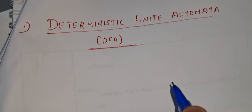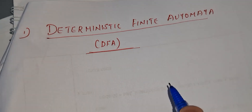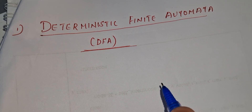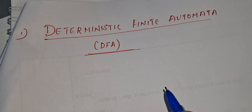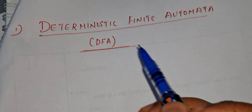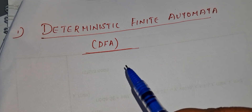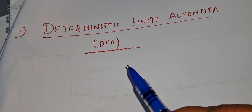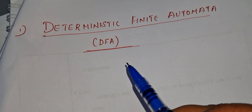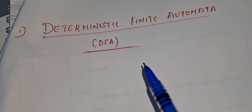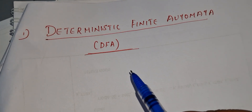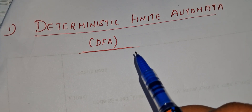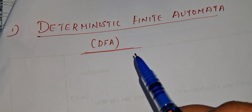Here we are going to study about what is DFA, that is Deterministic Finite Automata. In the previous video you already studied which category DFA belongs to. DFA belongs to the category of finite automata without output.